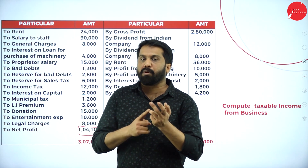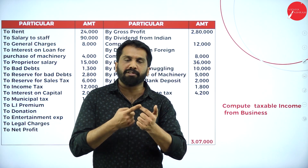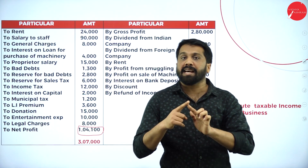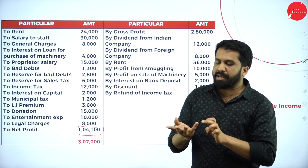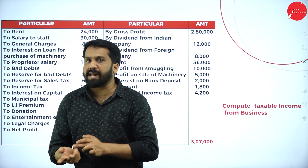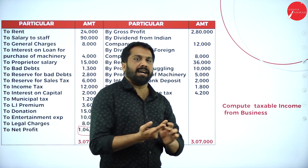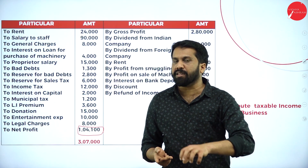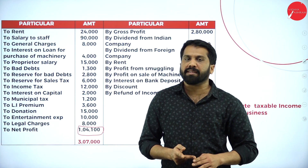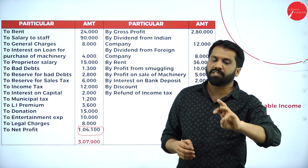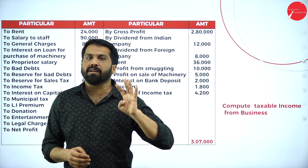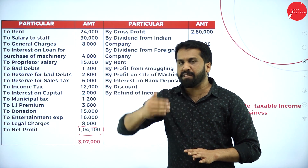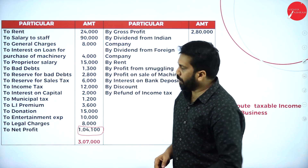Write down the disallowed items: all reserves, all provisions, income tax, life insurance premium, depreciation, personal expenses, municipal tax, and any tax paid other than GST — such as luxury tax in older question papers. These items — provisions, reserves, depreciation, personal expenses, income tax, life insurance premium, municipal tax — are not part of your business income.